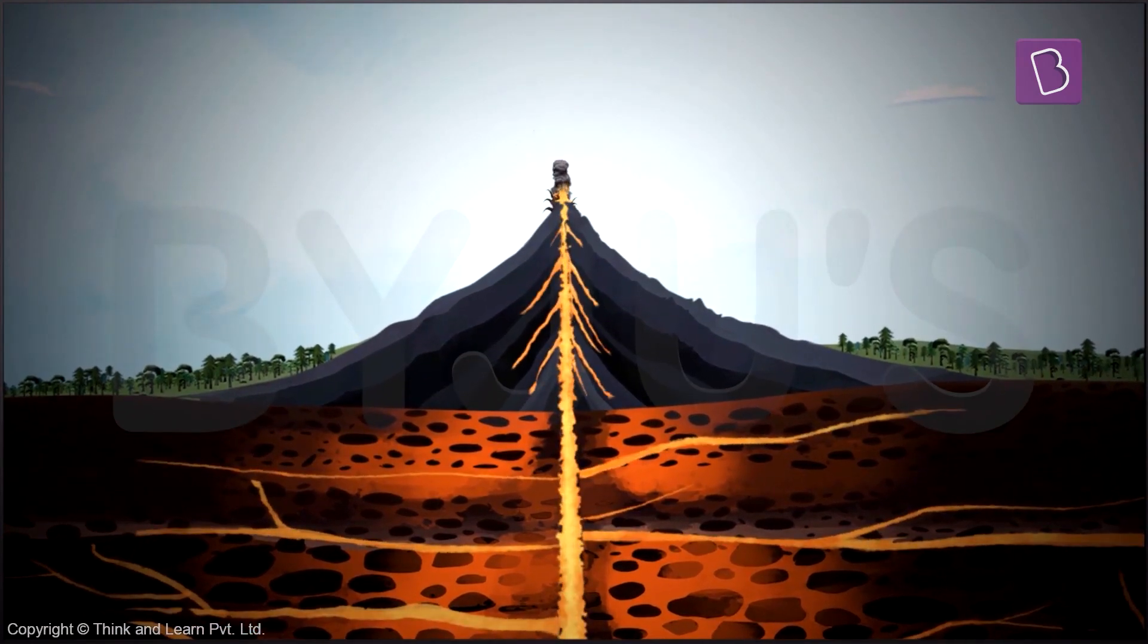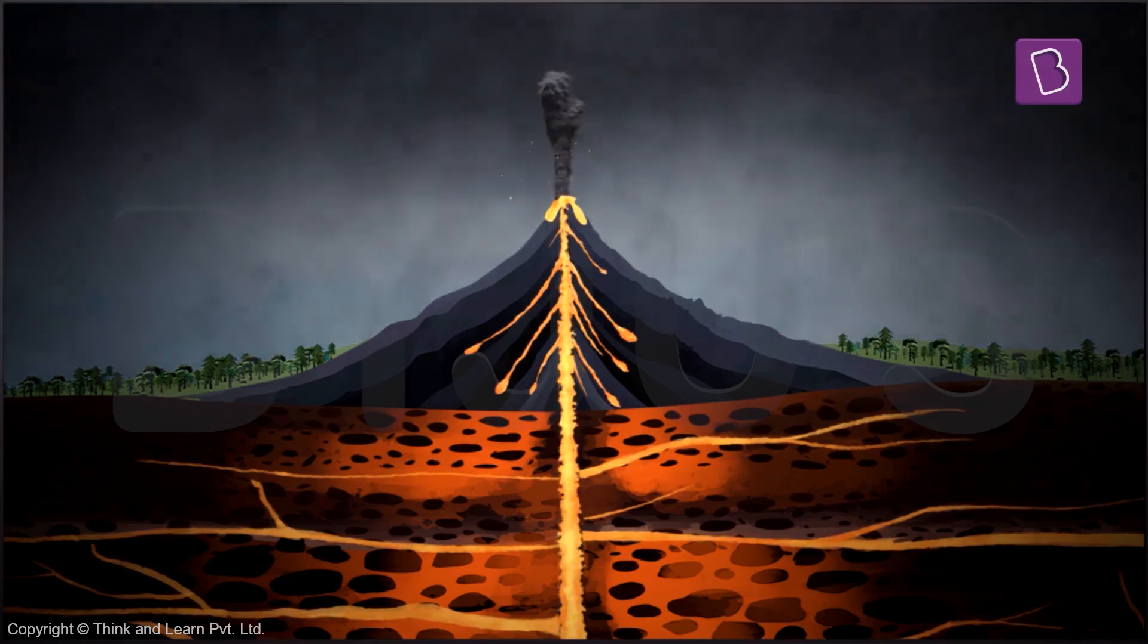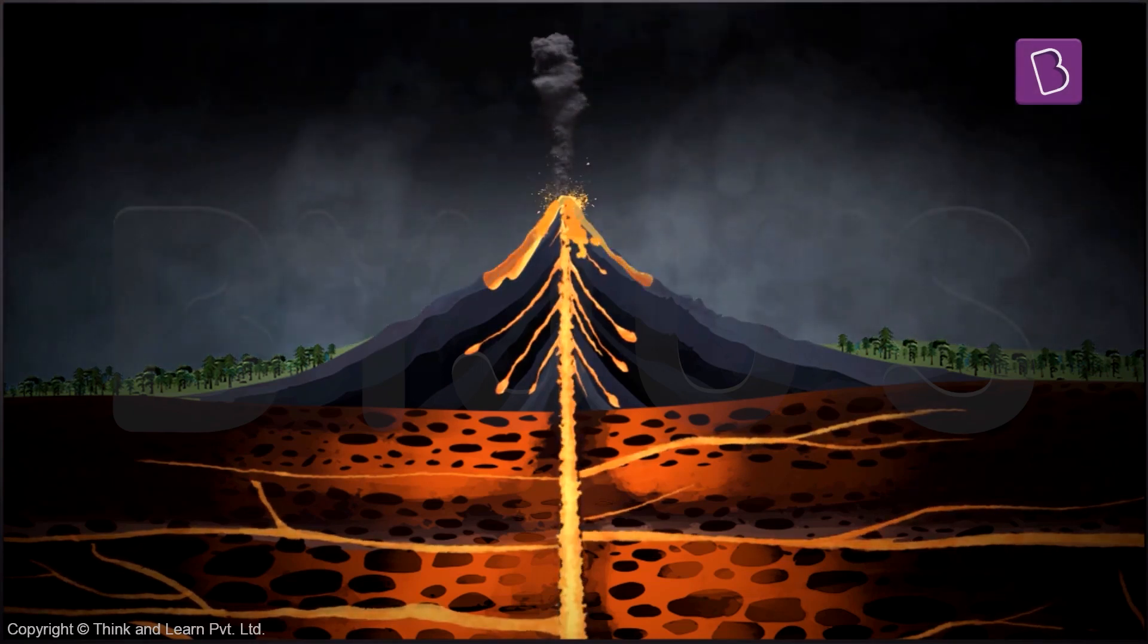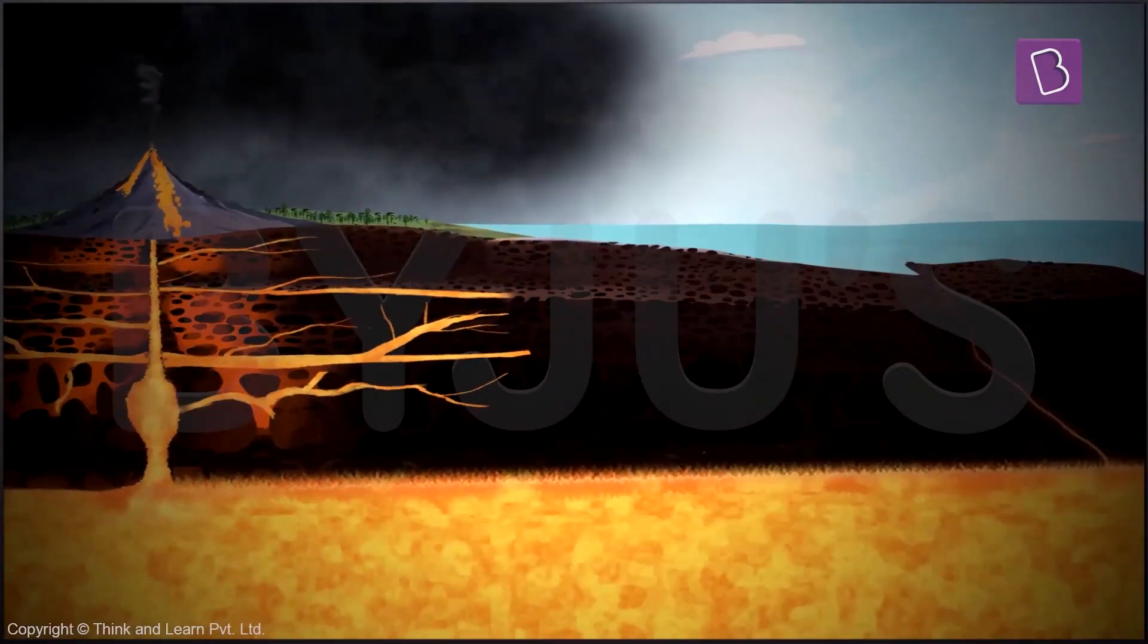It then shoots out as lava and steam and rocks which we see as volcanic eruptions on the surface of the earth.